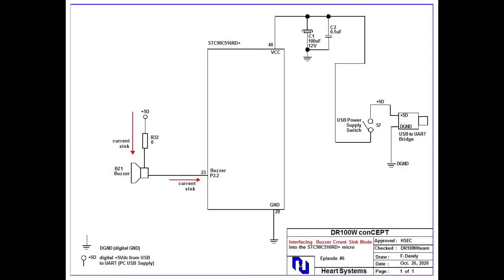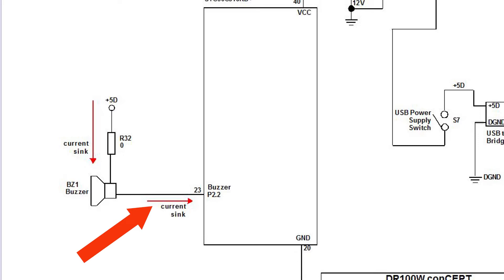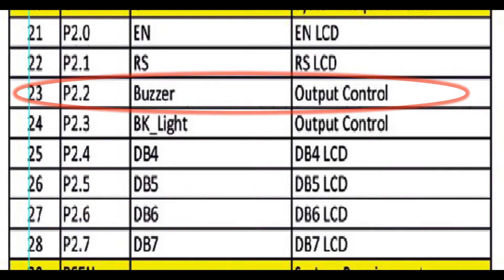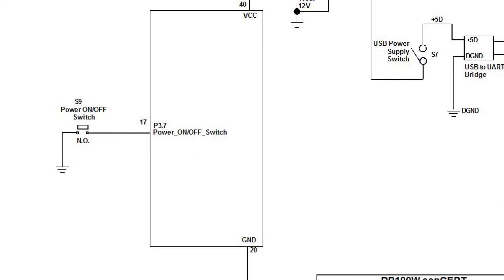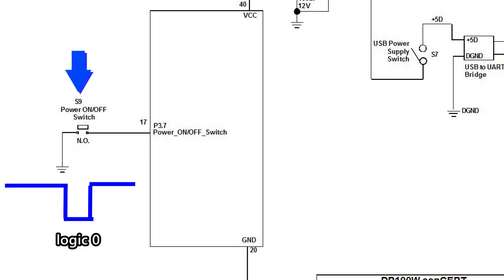The buzzer BZ1 is also connected in current sink mode, for the same reason as the LED. It is connected to port P2.2, chosen during the design stage and I/O mapping definition. The switch S9 is interfaced to the micro at P3.7 with the intention that it will be active Logic Zero, because the standard 8051 port is active Logic One at reset — so we cannot choose the switch to be active Logic One.